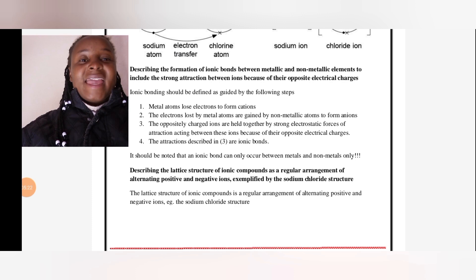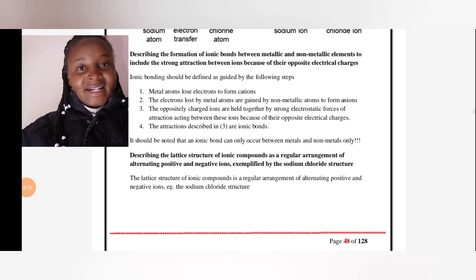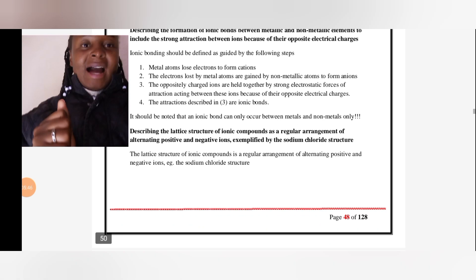The oppositely charged ions are held together by very strong electrostatic forces of attraction acting between these ions because of their opposite electrical charges. There's a strong bond that is being formed. The attraction described here is ionic bonds.